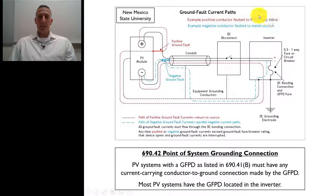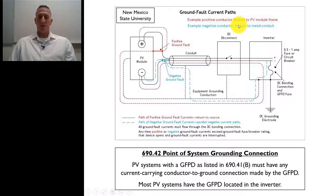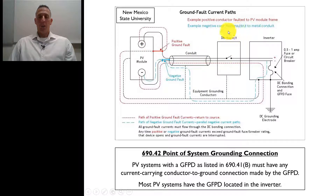If you take a look at this image right here, this is outlining and helping us understand the ground fault current paths. This is a representation of a solar PV system. Right here you can see the PV module or modules — this is our array. Here we have our conduit, here we have the DC disconnect, we have our inverter right here, and then we have our DC grounding electrode and then our grounding electrode conductor right here.